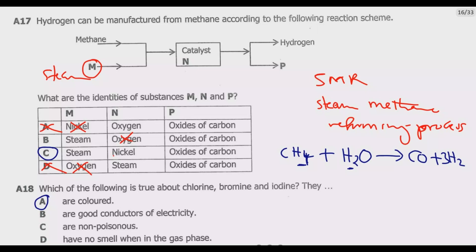If you look at B, they are good conductors of electricity. Halogens are not good conductors of electricity, so B cannot be correct. C, they are non-poisonous. These are poisonous substances, so C cannot be correct.